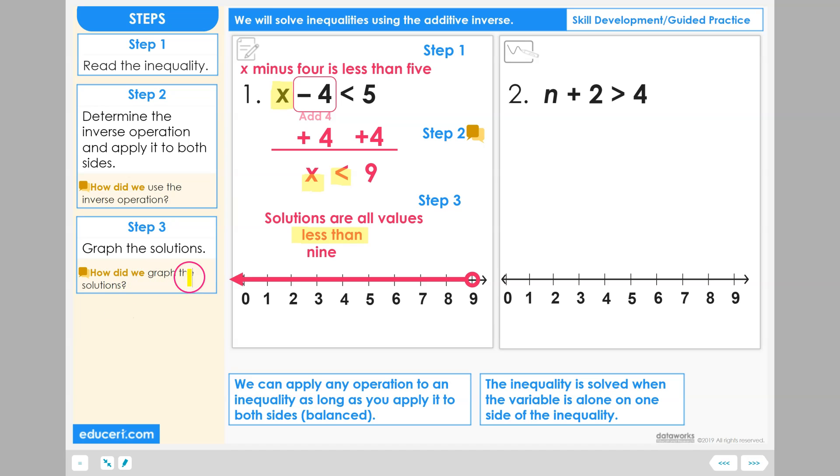How did we graph all the solutions? We use the inequality statement that we solved for. We graph the solutions by graphing the starting point using the correct circle type. In this case, an open circle because nine is not a solution. And then we draw the arrow in the direction of all values less than nine.